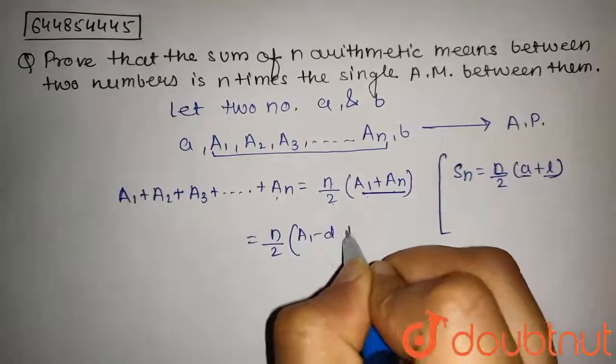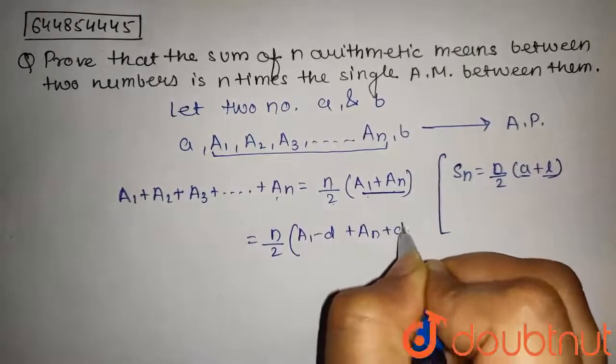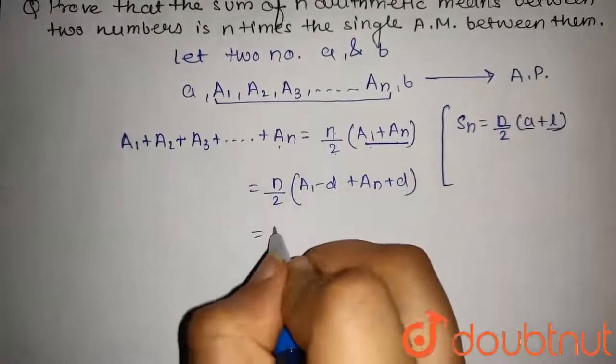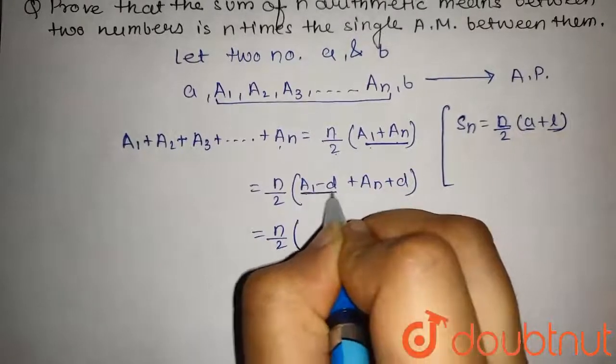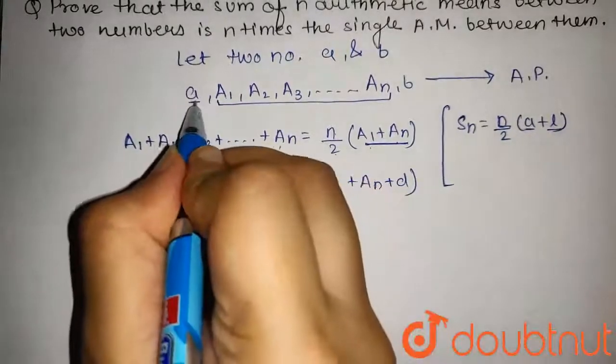Now A₁ minus d plus Aₙ plus d. This A₁ minus d will be equal to a.